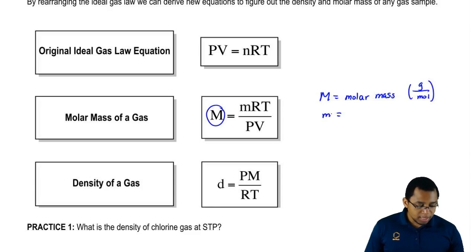M represents the mass of the gas in grams. All the other variables stay the same, so R is still our gas constant, temperature is still in Kelvin, P is still in atmospheres, and volume is still in liters.